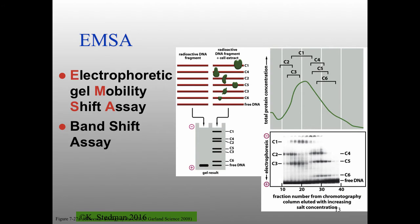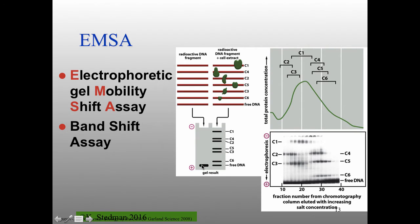The electrophoretic mobility shift assay, or band shift assay, is not in our textbook but should be. An assay is a way to figure out what your protein or enzyme is doing. Here you're looking for a DNA binding protein. You have a radioactively labeled DNA, and in the absence of protein it has one particular electrophoretic mobility; in the presence of a protein or multiple proteins, it's shifted to a different mobility.